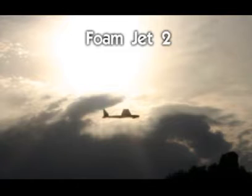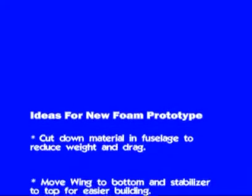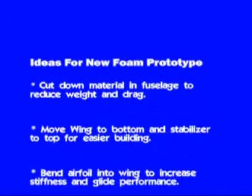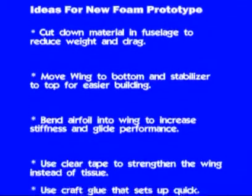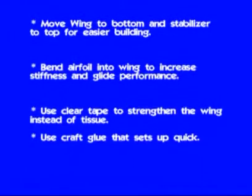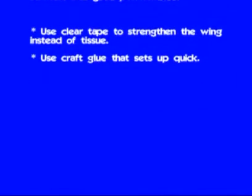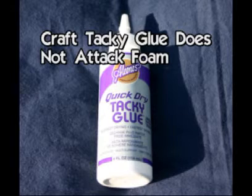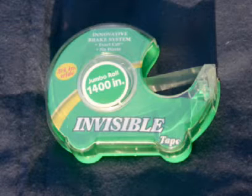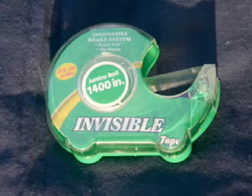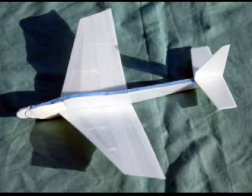Foam Jet 2 was an improvement — with lighter weight, less drag on the fuselage and tail, and an improved airfoil, the glide was better. Launch height appeared to be about the same. After several full-power launches, one wing panel began to bend, and on inspection there was a compression crease in the top surface. I put more transparent tape on the wing near the center, and further tests with more tape in the center went well.